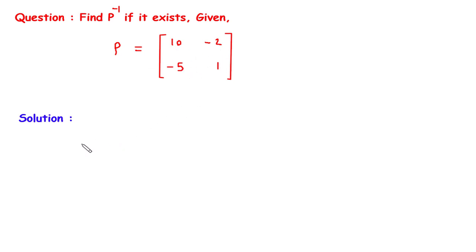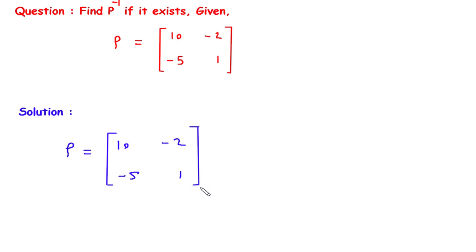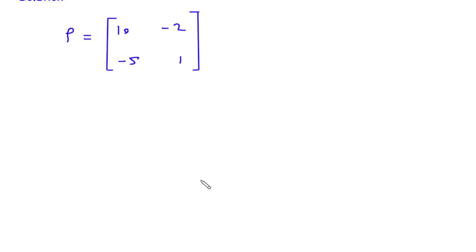So first we will write what is given. P is equal to 10 minus 2 minus 5 and 1. Now we have to find P inverse if it exists, so first we will check whether the matrix is singular or non-singular.